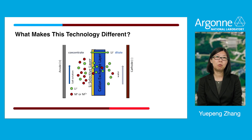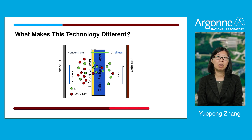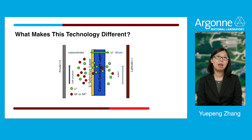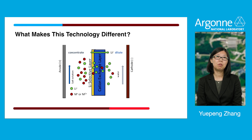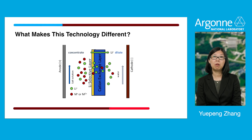What makes our technology special? Our technology is a membrane technology that is more compact than the traditional precipitation method, and we do not need regeneration of our membrane because we use a continuous process to extract the elements. In terms of selectivity, we made a special layer on the surface of a cation exchange membrane that can help us to selectively extract the elements we are interested in.